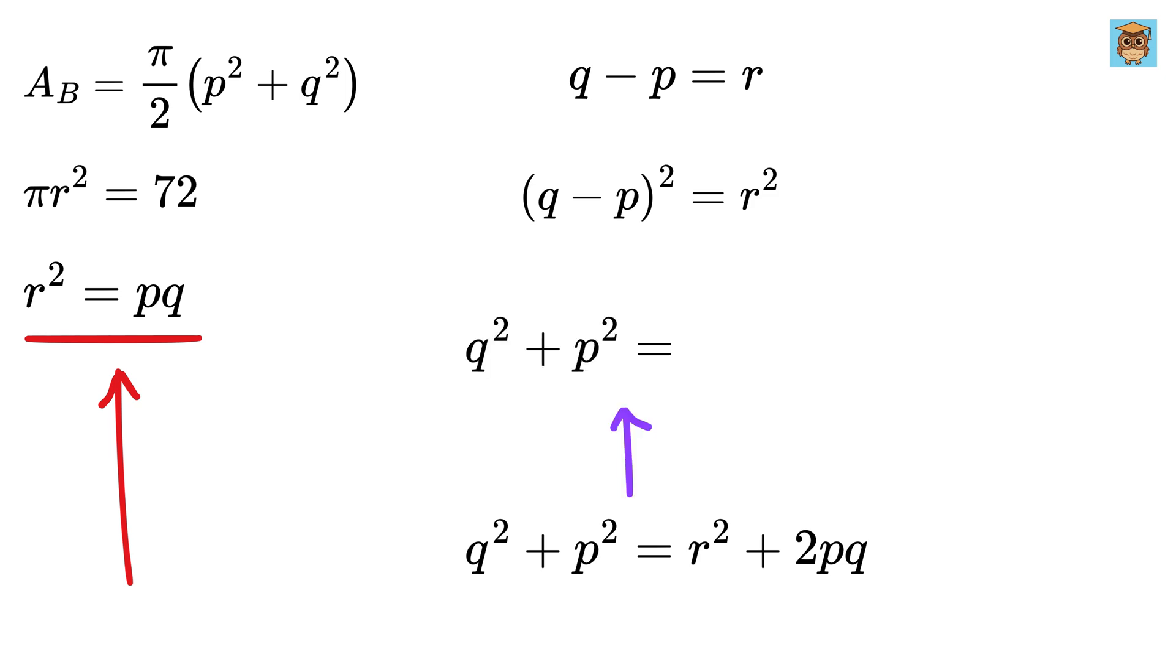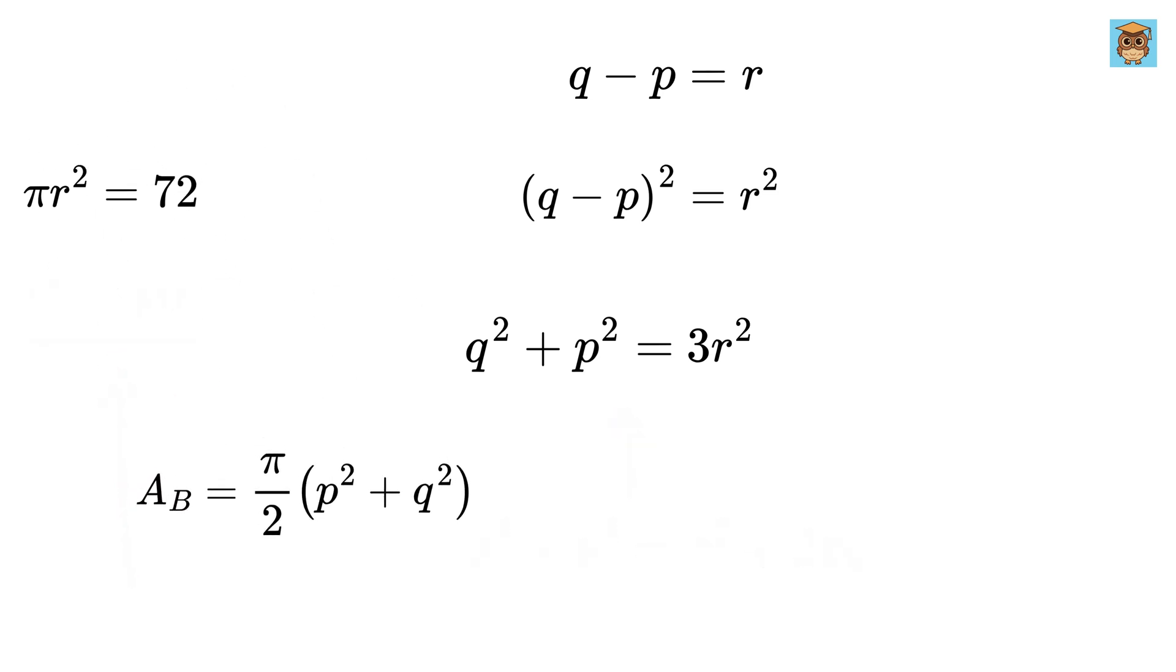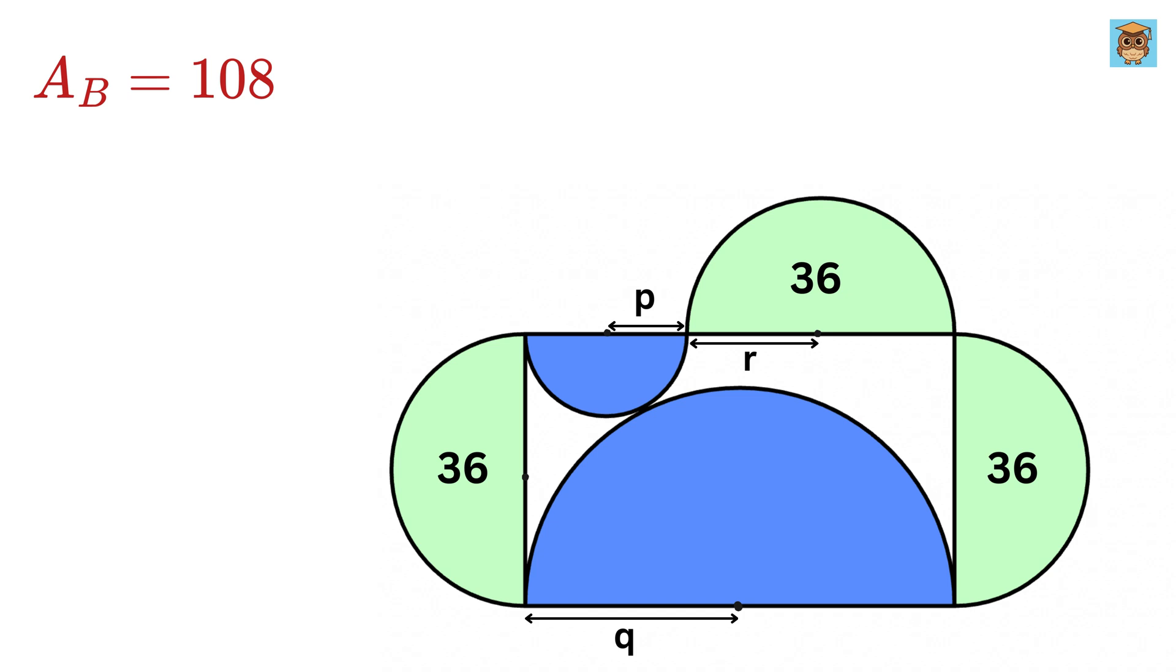Therefore, the final answer or the sum of blue areas, which is π times (P² + Q²) over 2, is equal to π times 3R² over 2. But π times R² equals 72, so this will be 72 times 3 over 2 or 108 square units, and that's it.